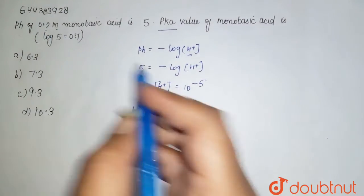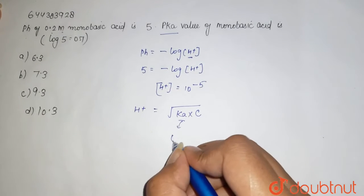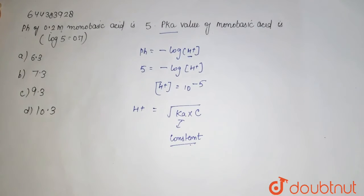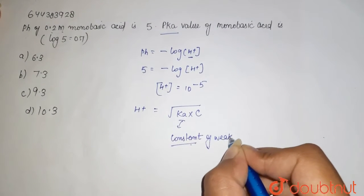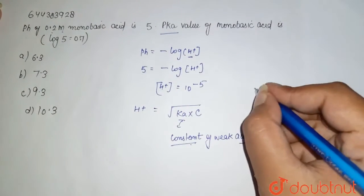Here Ka, this is the constant, acid constant - this is the constant of your weak acid. So here this is Ka we need to find it, and here it is pKa.